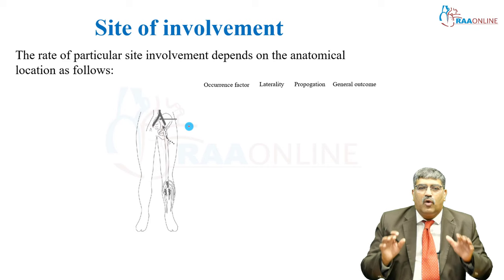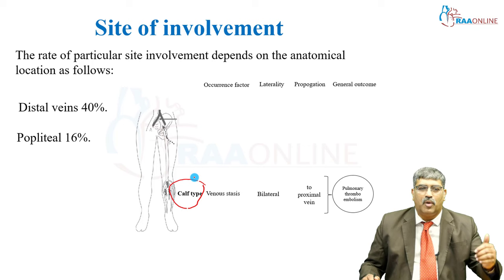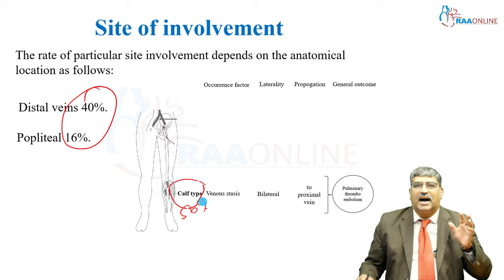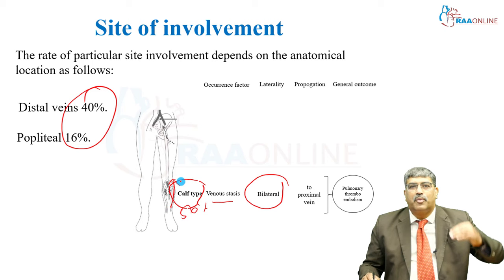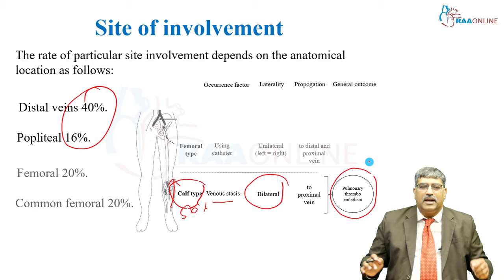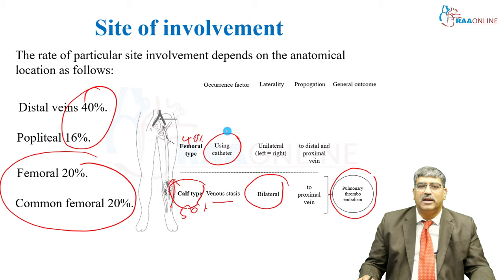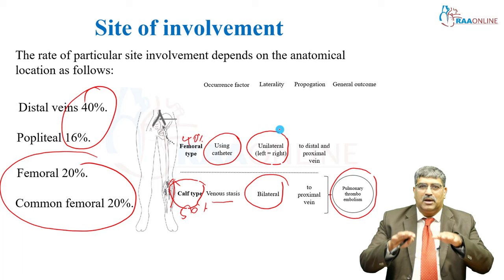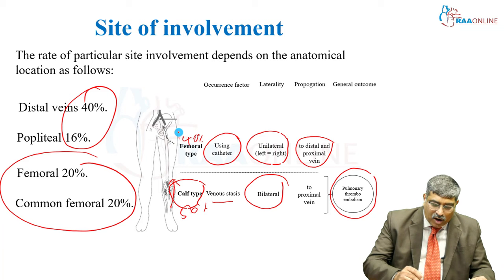Which side is involved more commonly? Most of the time — about 56 percent — deep vein thrombosis arises from the distal part or the popliteal vein. Here the occurrence is due to venous stasis. Most of the time it is bilateral, and from here it propagates to the proximal vein and ends up as thromboembolism. The next most common location is the femoral vein, at around 40 percent. Here, the femoral vein being used for central venous monitoring leads to deep vein thrombosis, with equal occurrence on both sides. From here the thrombus can move both proximally and distally.